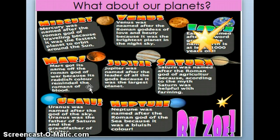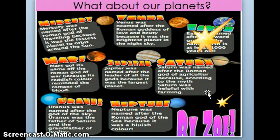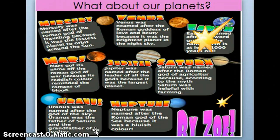Mars got its name from the Roman god of war because its reddish color reminded the Romans of blood. Jupiter was named after the leader of all the gods because it was the largest planet. Saturn was named after the god of agriculture — according to myth, Saturn was helpful with farming. Agriculture means farming. Uranus was named after the god of the sky, and Uranus was the father of Saturn and the grandfather of Jupiter. Remember, those Romans had lots of gods.